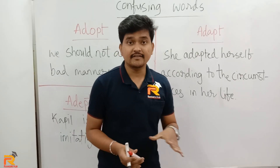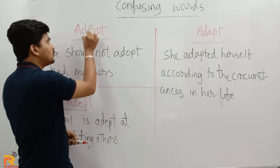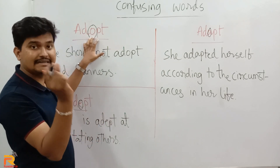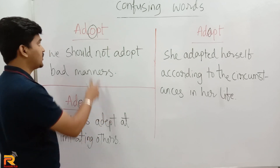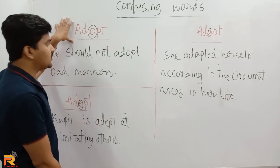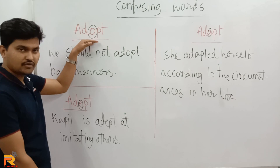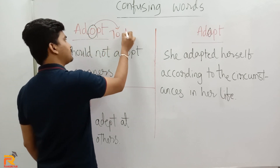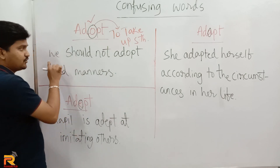The next pair of words is adopt, adapt, and adept. Adopt contains the letter O, adapt contains the letter A, and adept contains the letter E — they look quite identical if you don't focus on the letters. Adopt is widely used; it is used in situations where people adopt kids from orphanages. The exact meaning of adopt is to take up something. For example: 'We should not adopt bad manners' means we should not take up bad manners.